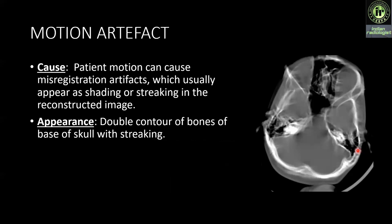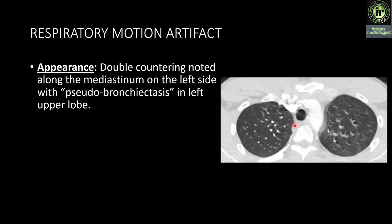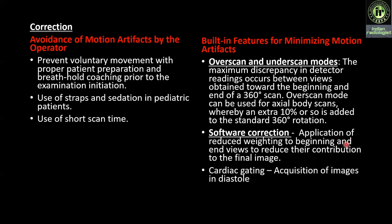Next is motion artifact. Patient motion can cause misregistration artifacts which usually appear as shading or streaking in the reconstructed image. Here we see double contouring of the base of skull with streaking, and respiratory motion artifact showing double contouring along the mediastinum on the left side with a pseudo-bronchiectasis appearance in the left upper lobe. Correction: prevent voluntary movement with proper patient preparation and breath-hold coaching prior to the examination. Use of straps and sedation in pediatric patients and use of short scan time.